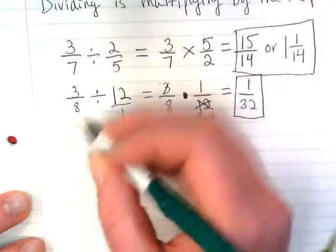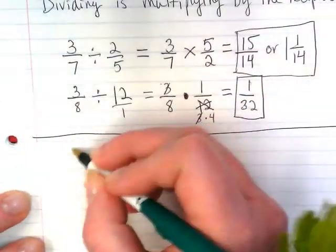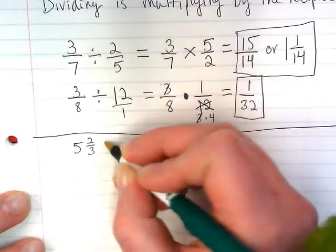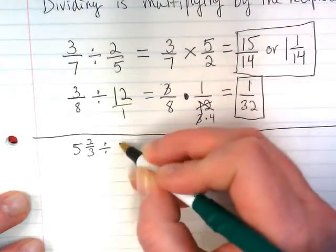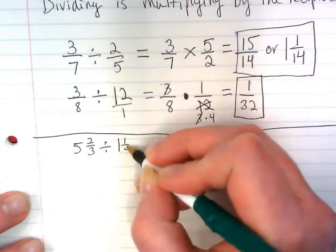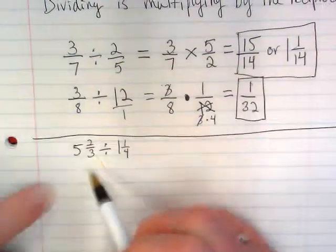Okay, I have some mixed numbers here. So let's just draw a line to keep them a little separate. That keep change flip still works, but we can't multiply by the reciprocal until we've turned the mixed fractions into improper fractions. So let's first rewrite this.